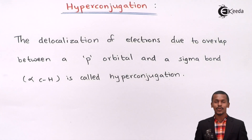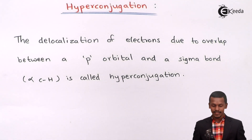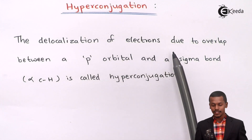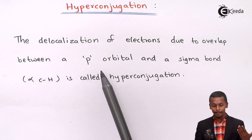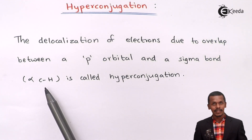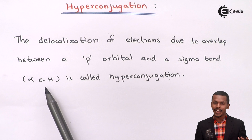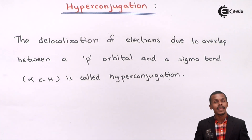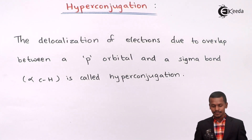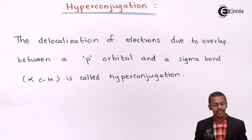Before understanding hyperconjugation, we should understand its definition. The delocalization of electrons due to overlap between a p orbital and a sigma bond — that is the bond between the alpha carbon and hydrogen — is called hyperconjugation. Let us understand in more detail how this delocalization of electrons takes place.